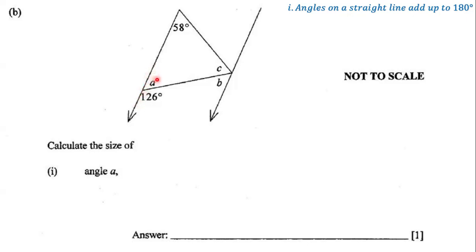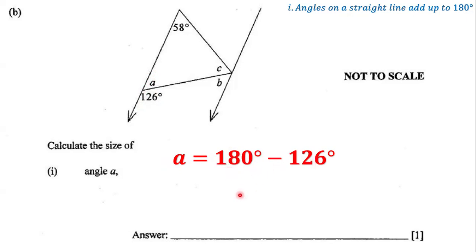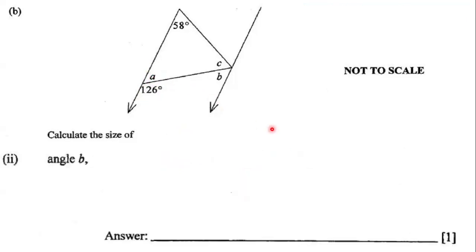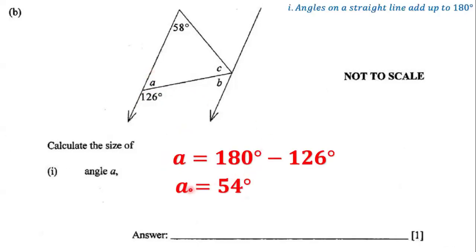So to determine the size of angle A, we're going to take 180 degrees and subtract 126. 180 degrees minus 126 gives us 54. So angle A is 54 degrees — that's the answer.